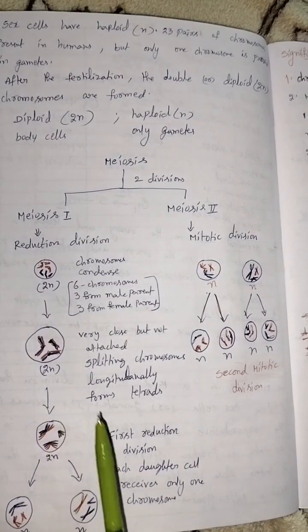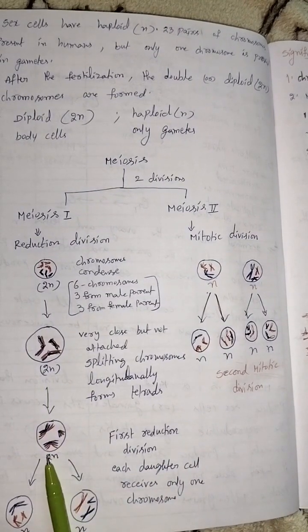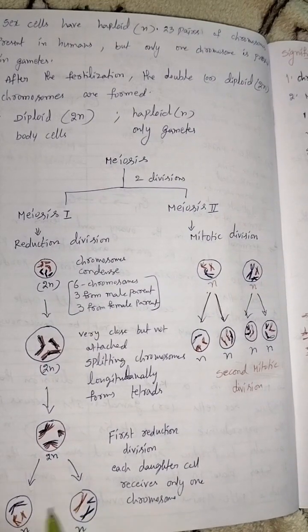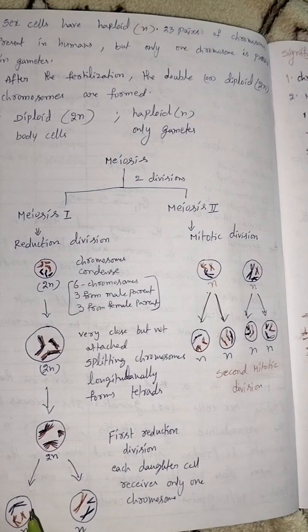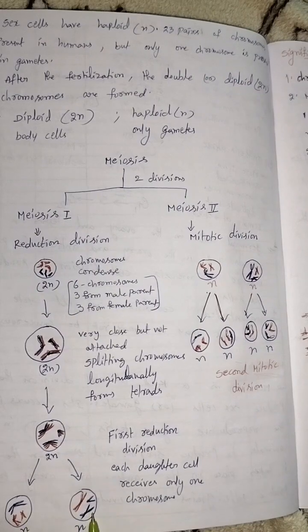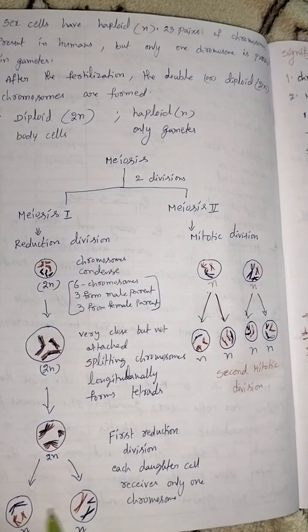It is also 2N. After then, first reduction division forms two daughter cells. Each daughter cell receives only one chromosome.